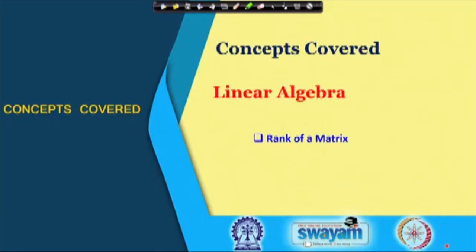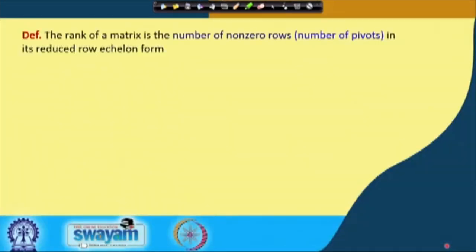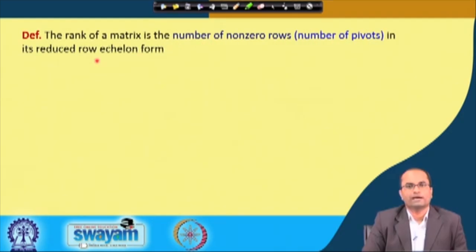Welcome back. This is lecture number 43 and today we will discuss rank of a matrix from the topic of matrix algebra or linear algebra. The definition we start with, which we have mentioned in one of our previous lectures, is that the rank of a matrix is the number of nonzero rows, or the number of pivots, in its reduced row echelon form.